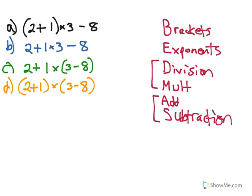So if you go in that order, you can't go wrong. What I've listed here are four examples. You can see that the numbers are all the same: 2 plus 1 times 3 minus 8. All I've done is move some brackets around, take away the brackets, add new brackets, and we'll see how that changes our answer. We're going to get a different answer for all of these.